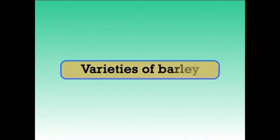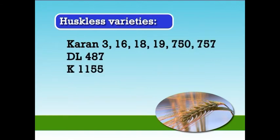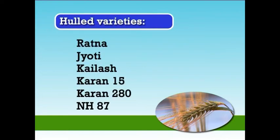Improved varieties of barley developed so far are huskless varieties — C-16, 18, 19, 750, 757, DL487, and K1155. Hull varieties include Ratna, Jyoti, Kailas, Karan-15, Karan-280, and NHH-7. Salt tolerant varieties are Karan-3, Karan-4, 16, 18, 19, Jyoti, Amber, Azad, and C251.